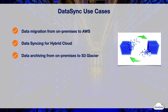You can use DataSync to move cold data from expensive on-premises storage directly to durable and secure AWS storage, such as S3 Glacier and Glacier Deep Archive for long-term storage. By doing this, you can free up on-premises storage capacity and shut down legacy storage systems.